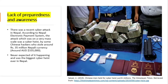What does lack of preparedness and awareness mean? According to the example shown in this slide, it means a government of a particular country never expecting a big cyber threat. For example, there was a recent cyber attack in Nepal. According to the Nepal Electronic Payment System, the attack was a cyber heist by Chinese hackers who stole around Rs 35 million in Nepali currency, which is around 335 Australian dollars. They never expected it — it was the biggest cyber threat ever in Nepal. We must always be prepared, and our government should be too.